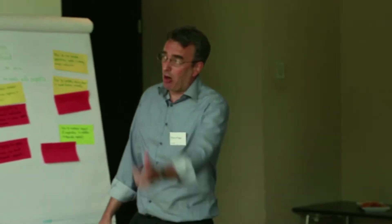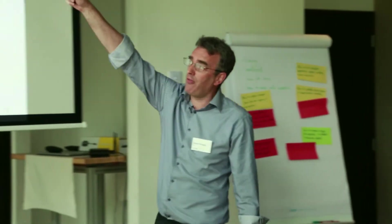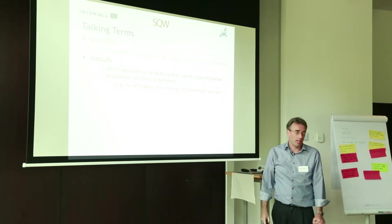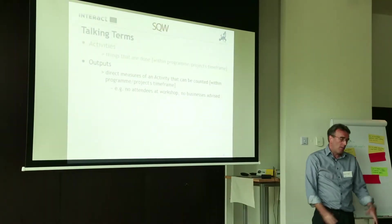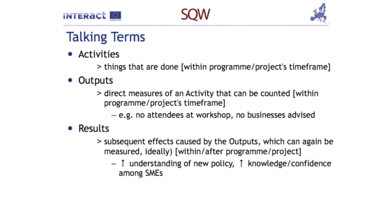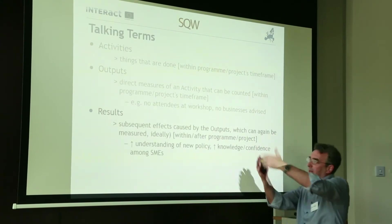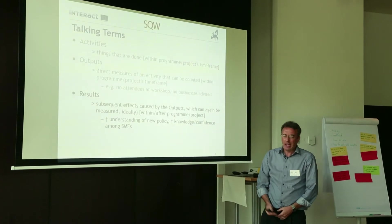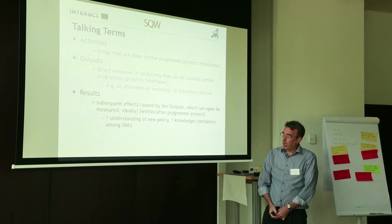Outputs are the things that flow from those activities that can be counted again, typically within a programme or project timeframe. Most of those are countable; some of them which are qualitative, you can begin to assess them qualitatively. And that then gives rise to results, and results are the things — the consequential effects that come out of the outputs — which typically can be measured within and sometimes after a programme and a project.